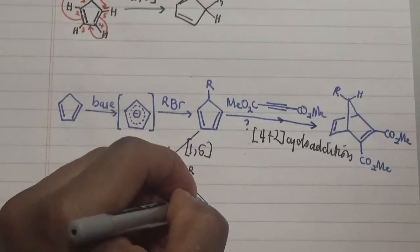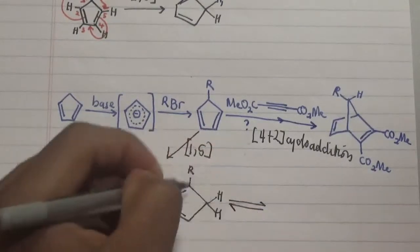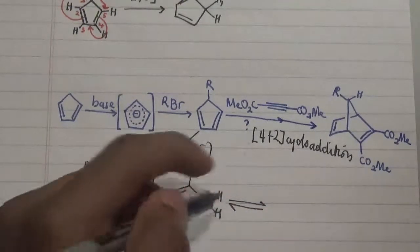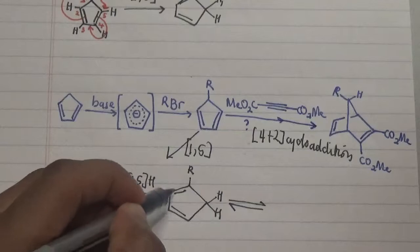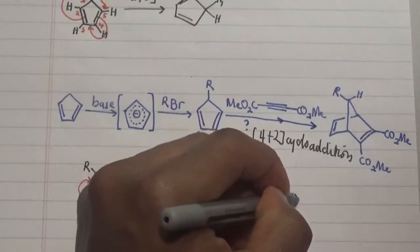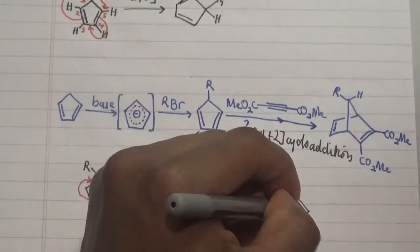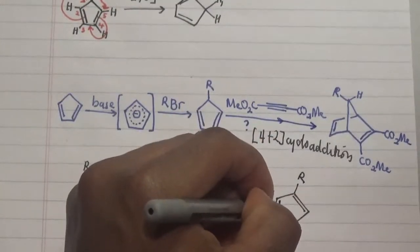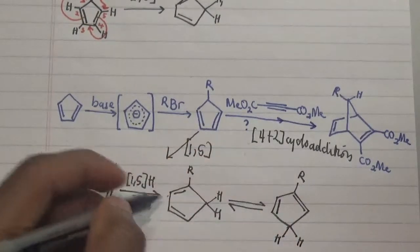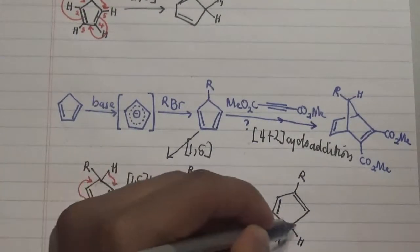So we have this particular product that is being formed first, and this is actually at equilibrium with the other one I'm going to draw. It goes back and forth because this is a continuous process, a continuous hydrogen movement going from one position to another. We have this particular structure, and we have another one shown here with the R group, this bond, and our hydrogen which is moving from carbon 1 to carbon 5 to carbon 4, as shown here and there respectively.